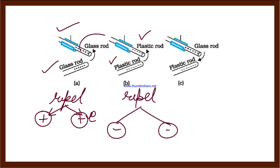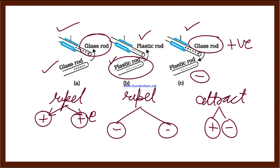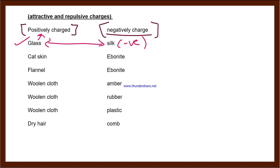So negative-negative also repels, just like positive-positive repels. Now take one glass rod and one plastic rod. In this third experiment, what will happen: the glass rod will acquire a positive charge and the plastic rod will acquire a negative charge, so they attract each other. Opposite charges attract each other. So positive charge and negative charge will attract each other. To see how different objects acquire charges — first experiment: take a glass rod and a silk cloth; when silk is rubbed with the glass rod, the glass acquires positive charge and the silk acquires negative charge.